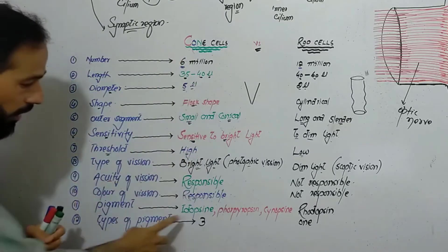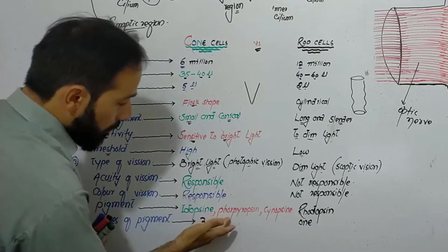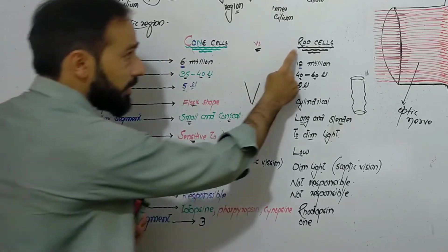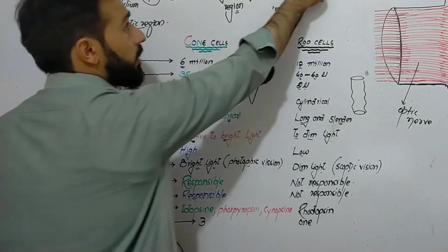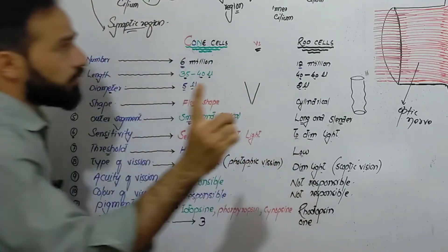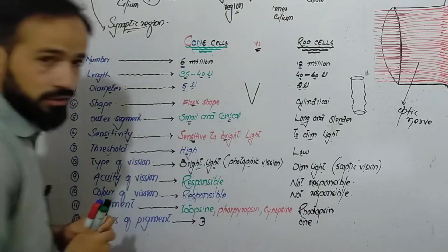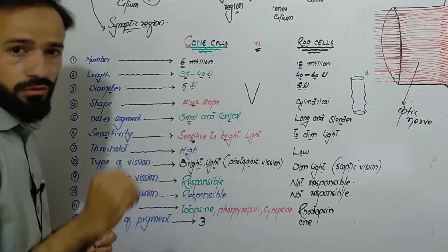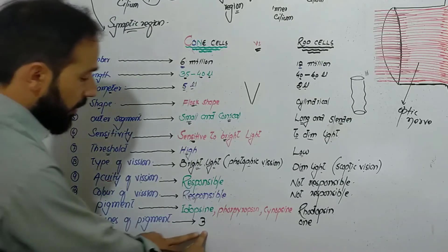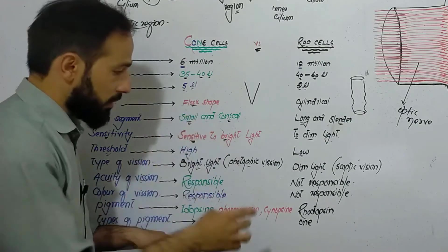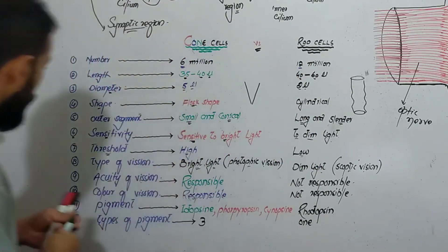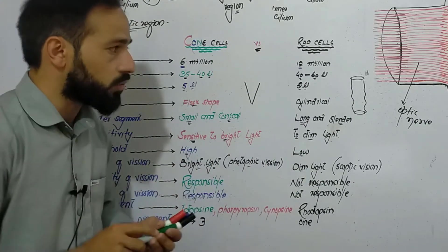The next difference is in pigments. The pigments present in cone cells are iodopsin, also called porphyropsin or cyanopsin. The pigment present inside rod cells is rhodopsin. In cone cells there are three types of pigments, and in rod cells there is only one type of pigment.